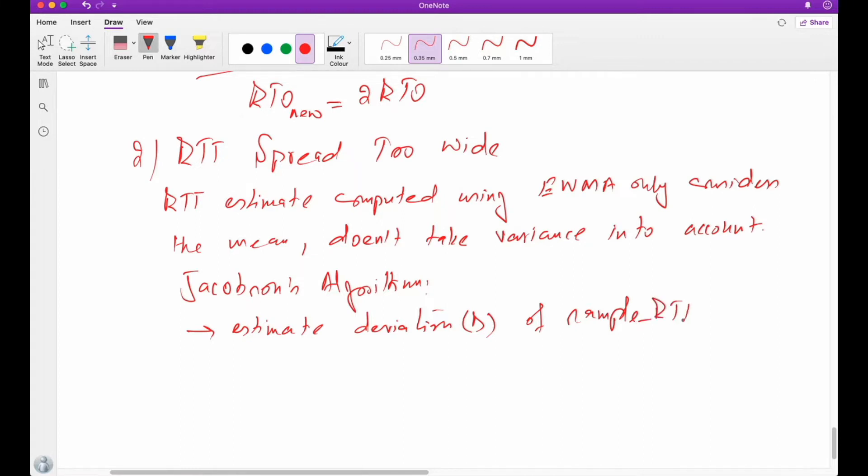So sample RTT will be calculated in the same way that we have done earlier. There's no change in calculating sample RTT. But now, in order to control its spread, the RTT spread, we need to estimate its deviation, right?